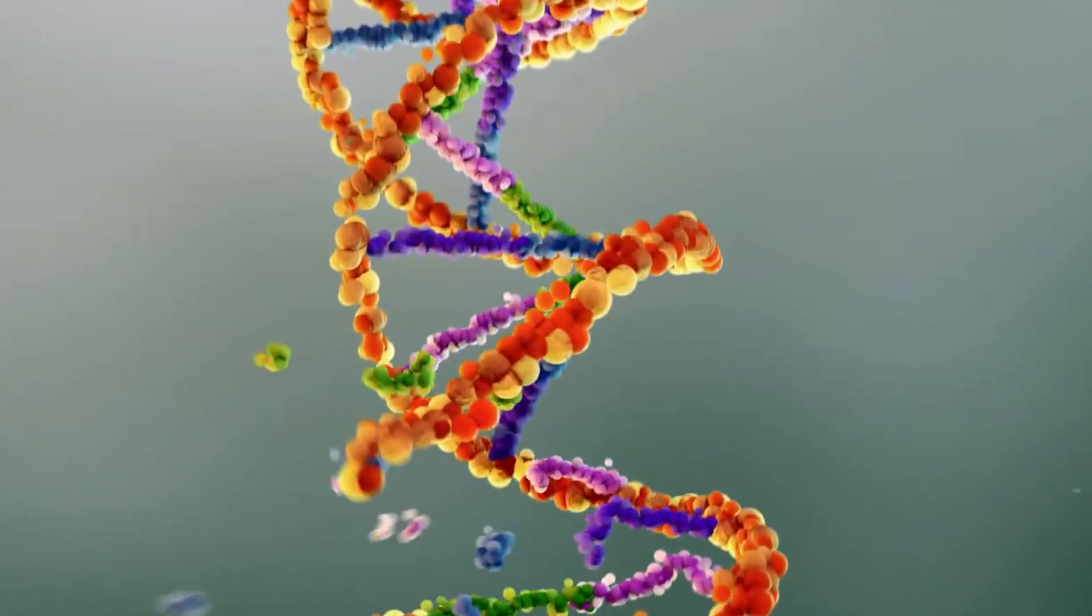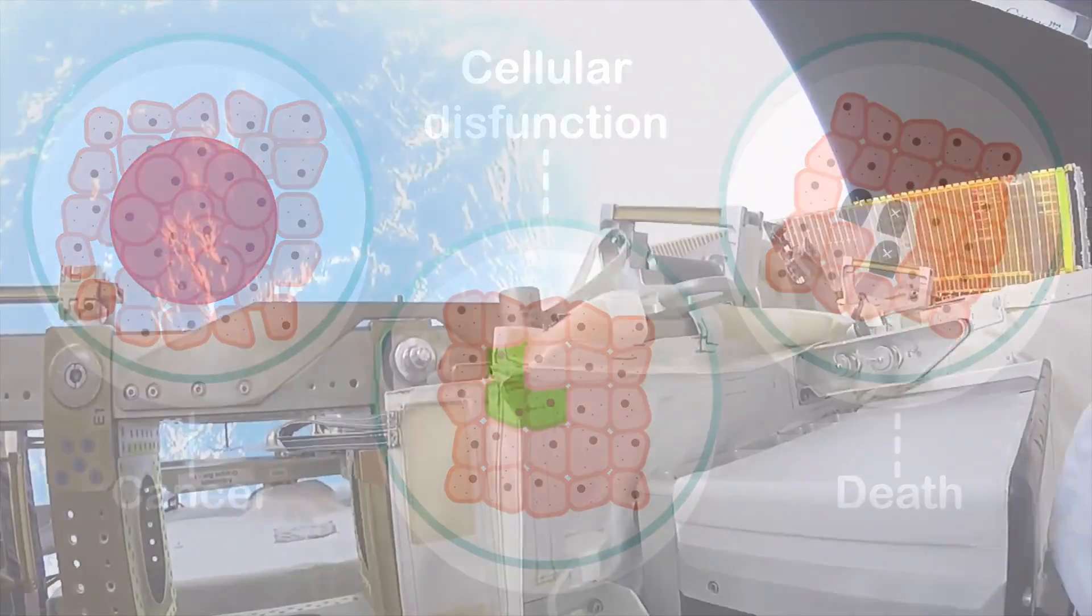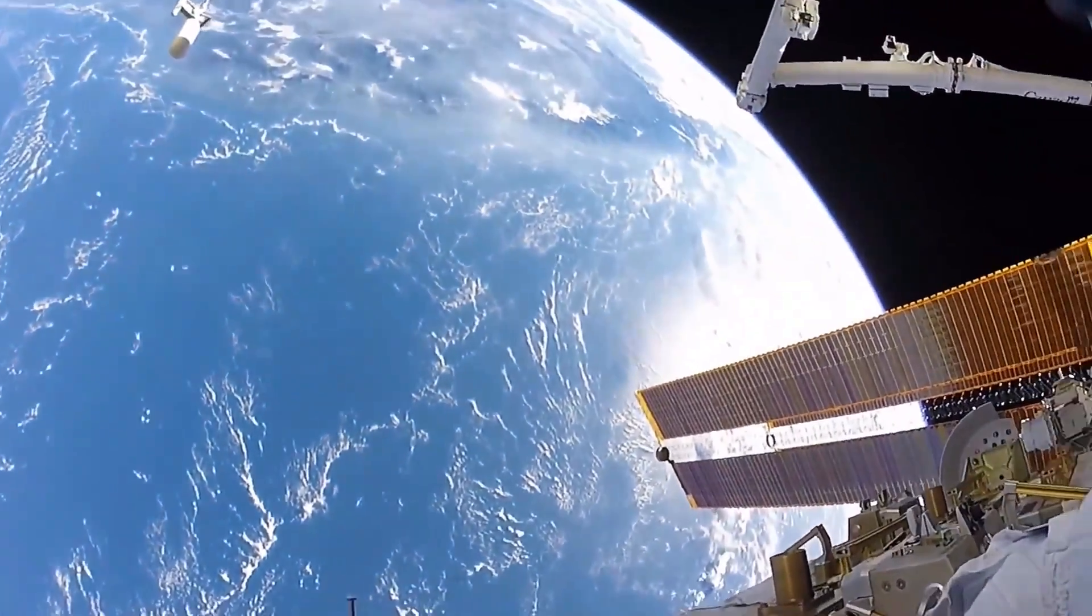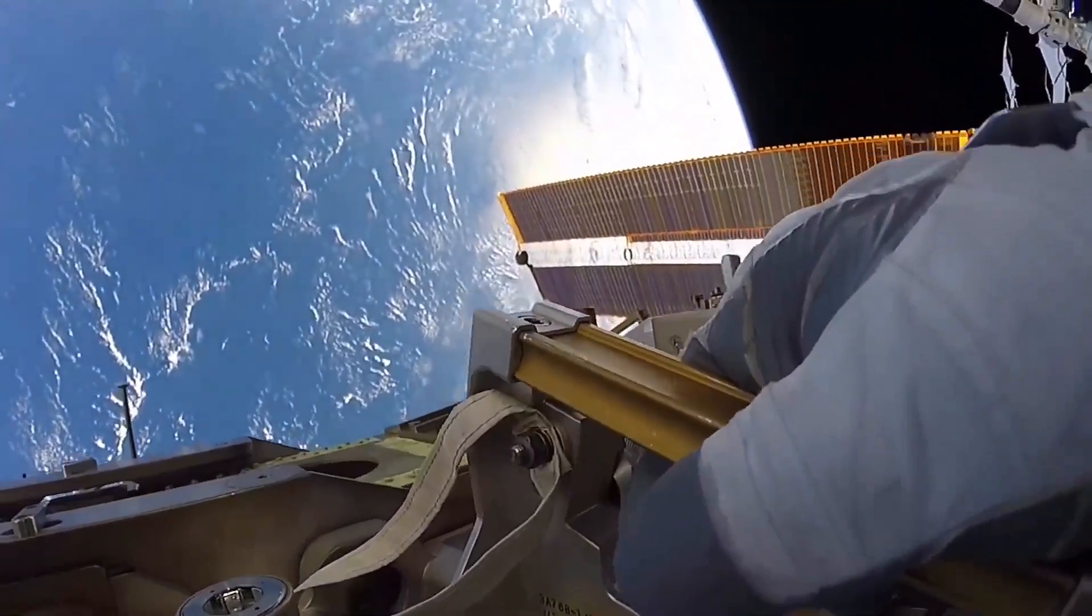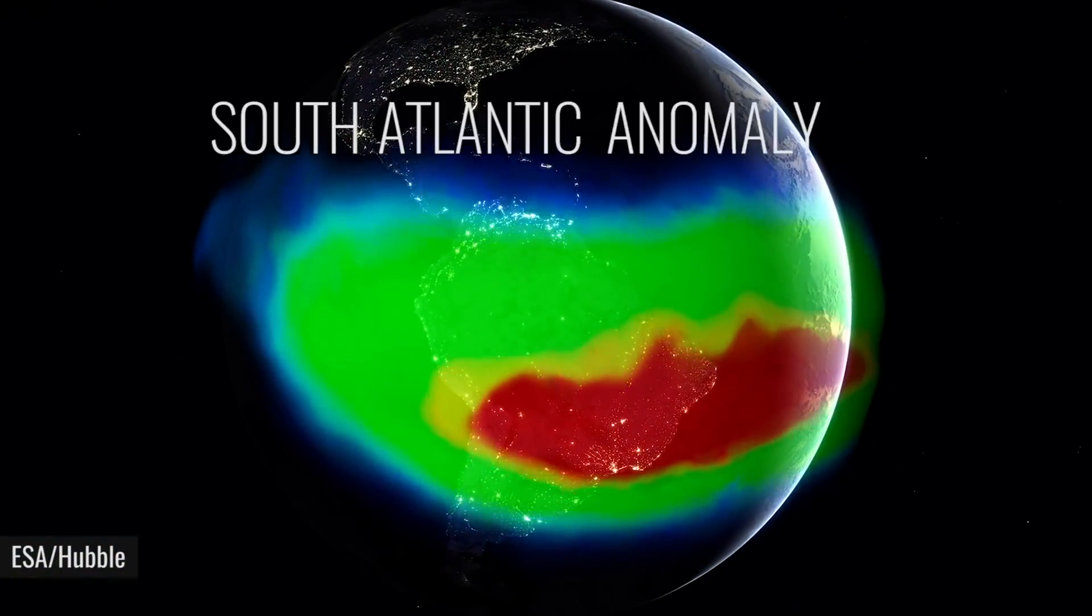These highly energetic particles can also pass through human tissue, damage DNA, and lead to cancers and other radiation related issues. These are risks that astronauts have to account for as they travel further away from Earth or pass through a weaker part of Earth's magnetic field, like the well-known South Atlantic anomaly.